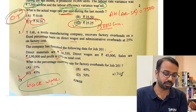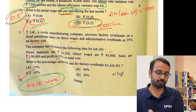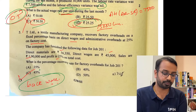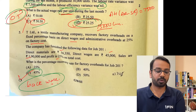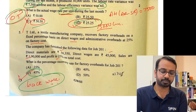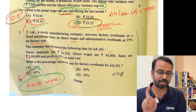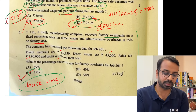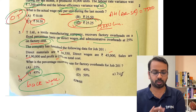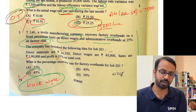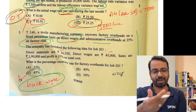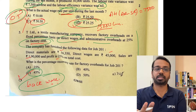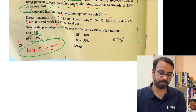This one I have done using back working — I get 45 percent, which fits perfectly in the overall scheme. One thing to note: overhead is on direct wages and admin is on factory cost. That is all that is given, so if you do a back working it will be faster in the examination.